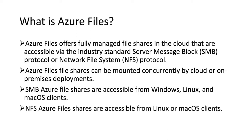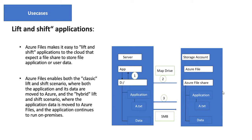There are some use cases for when we should use Azure File Share. The first use case is lift and shift applications. As you can see in this diagram, this is our on-premises environment and this is our cloud environment. Here we have one server on which we have hosted one application.